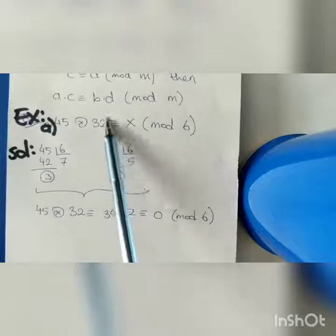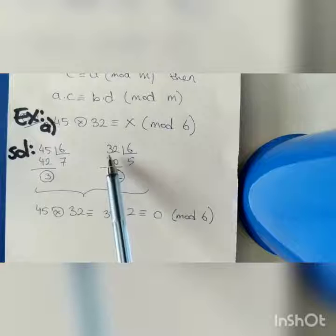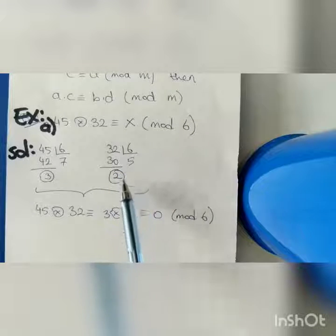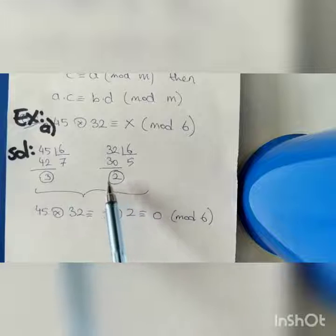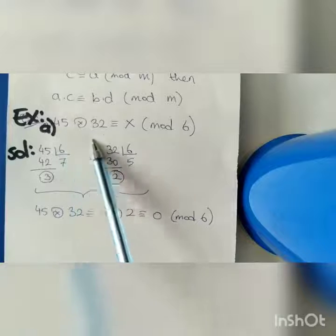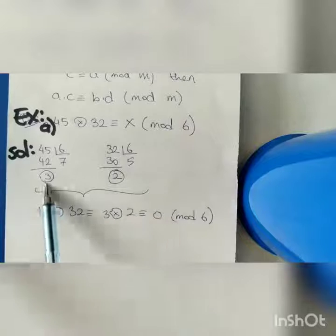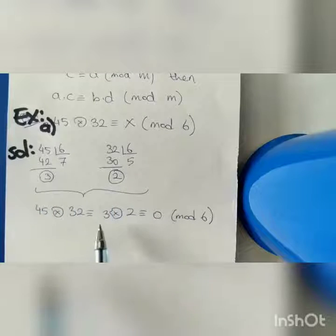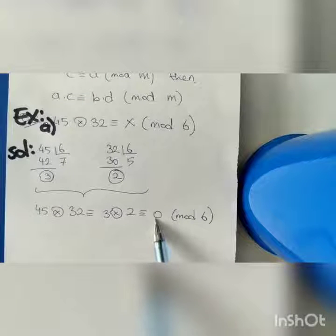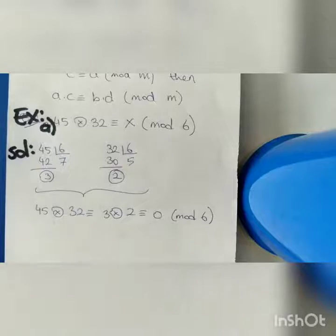Then for our second number, 32, we should find the equivalent number of 32. Dividing 32 by 6, we find our remainder is 2. The multiplication of these two remainders is the equivalent number of the multiplication of those two numbers modulo 6. By multiplying 3 by 2, we get 6. Since 6 is divisible by 6, we get 1 with remainder 0. That's why the equivalent number of 45 times 32 modulo 6 is 0.